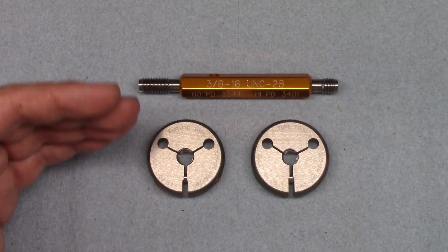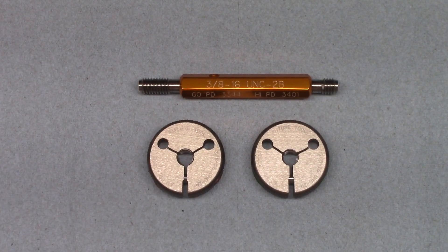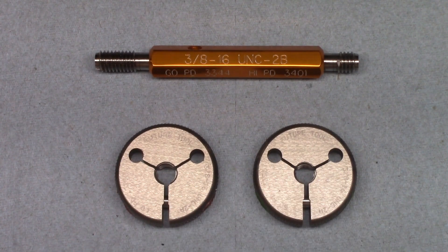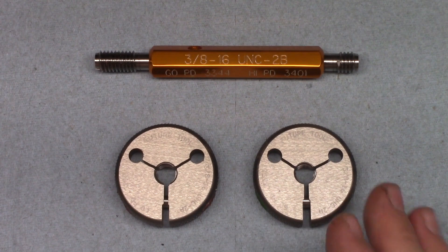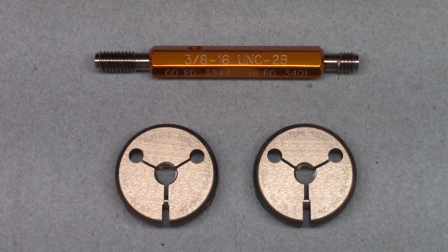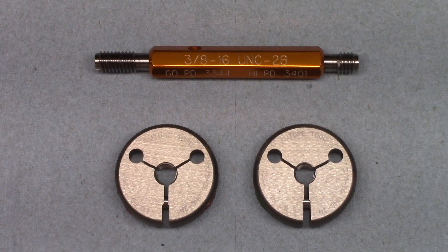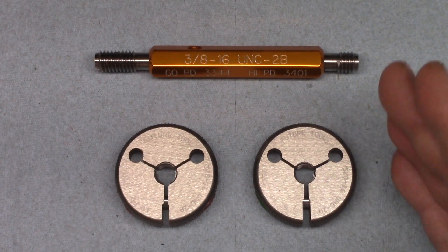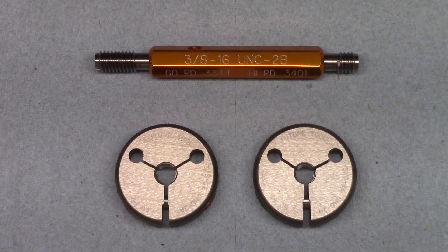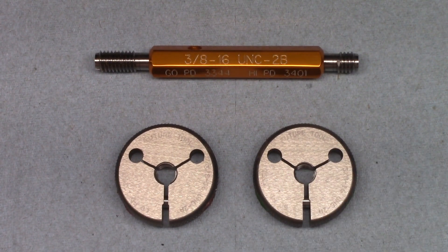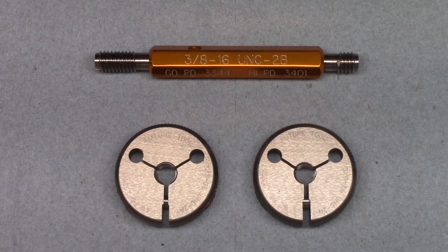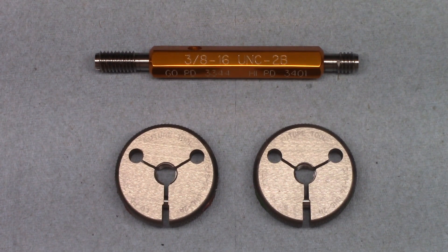Let's talk about the advantages and disadvantages of these gauges. The biggest advantage is they're faster and more consistent than measuring the pitch diameter with a thread micrometer or thread wires. Even experienced machinists will get varying readings on a thread micrometer when measuring the exact same thread, while the three-wire method can be awkward for beginners, and it opens up the possibility of a math error when calculating the pitch diameter.